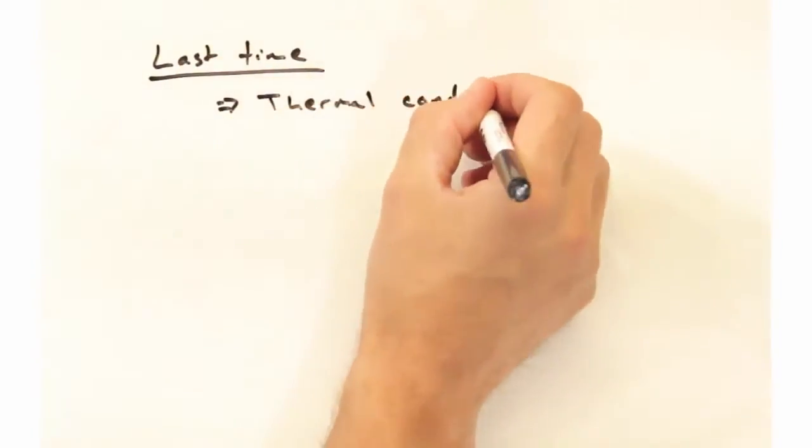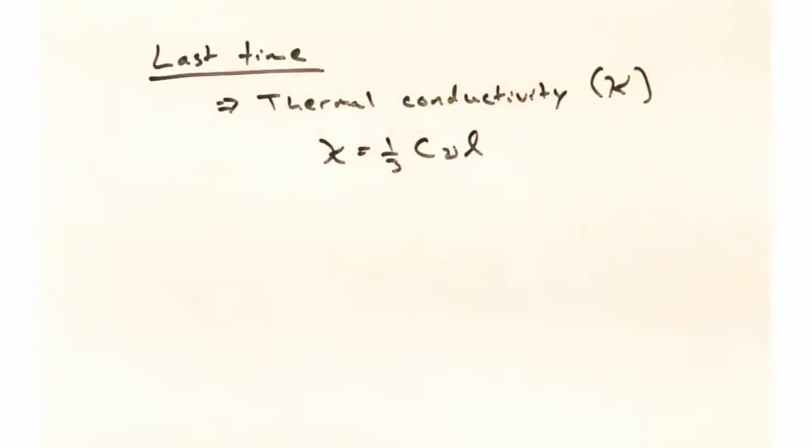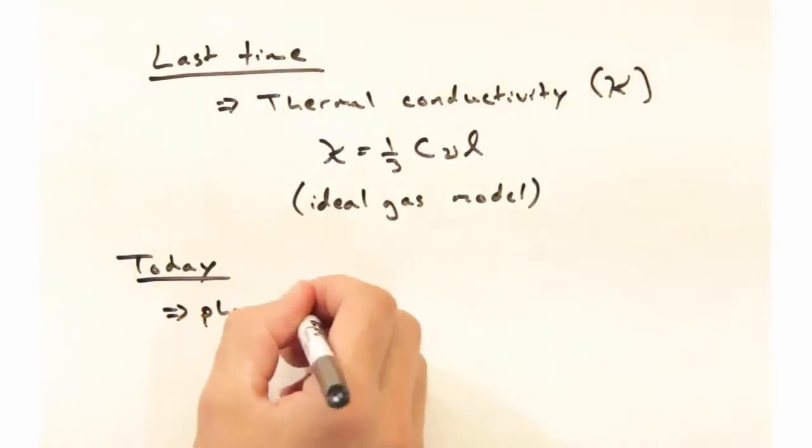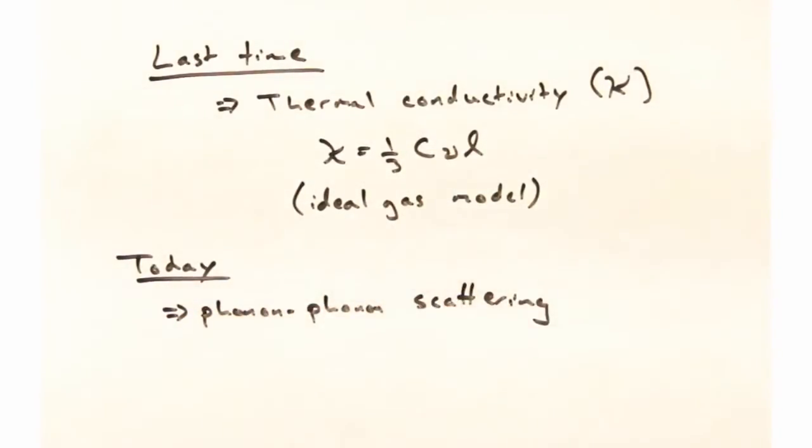Last time we took a look at thermal conductivity and related it to the heat capacity of your solid, the velocity of the phonons, and the mean-free path between collisions. Today we're going to look a little bit more at this mean-free path term, and in particular, look at phonon-phonon scattering.